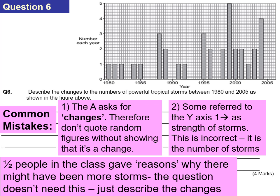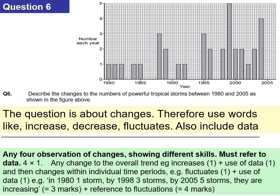The next question asks you to describe the changes to the number of powerful tropical storms between 1980 and 2005. A common mistake: it asks for changes, so don't just quote random figures without showing that it's a change. Some people referred to the y-axis as the strength of the storms — it's not the strength, it's the number each year. Some students also gave reasons why there might be more storms; we just need the changes, using words like increase, decrease, fluctuates, and including some data.